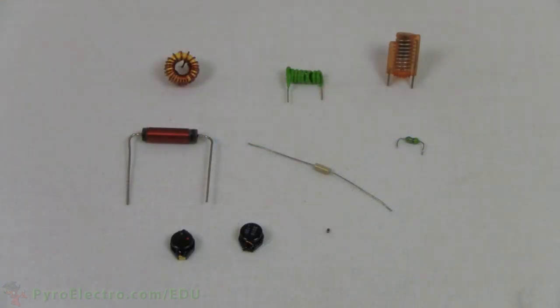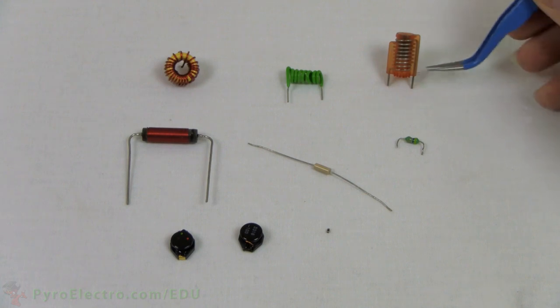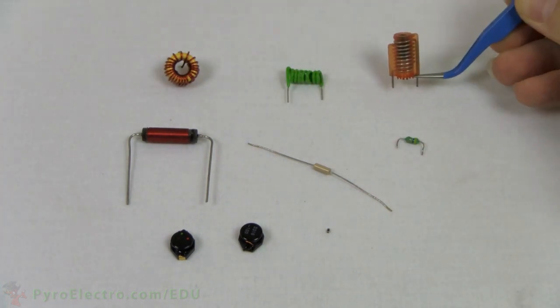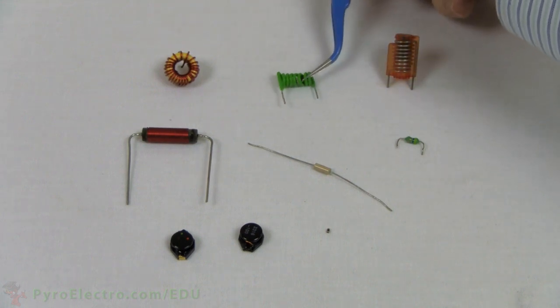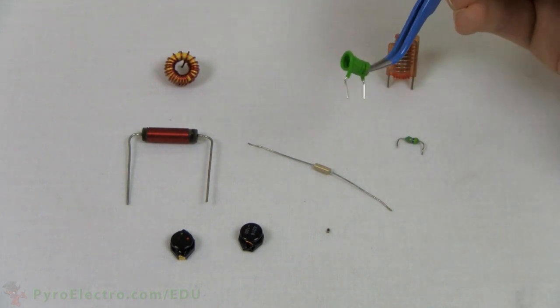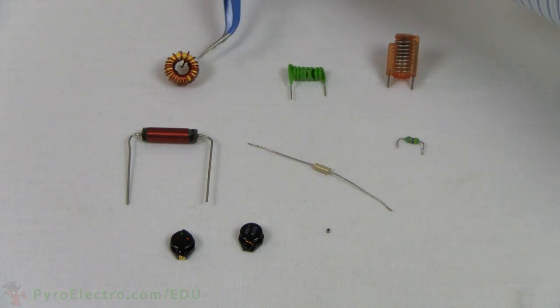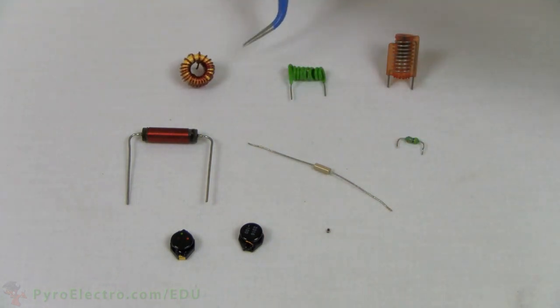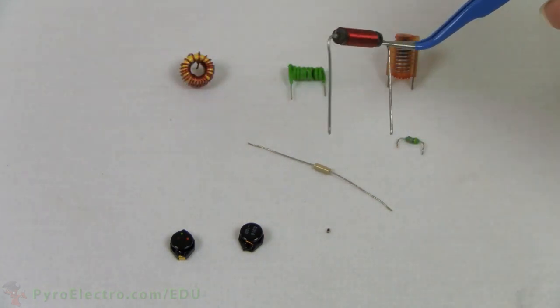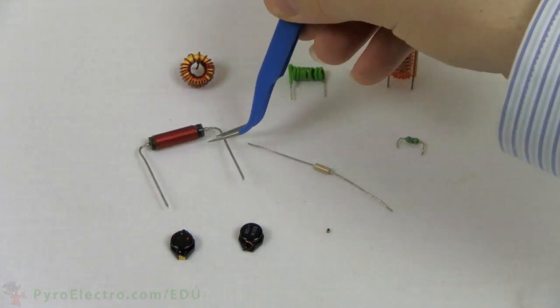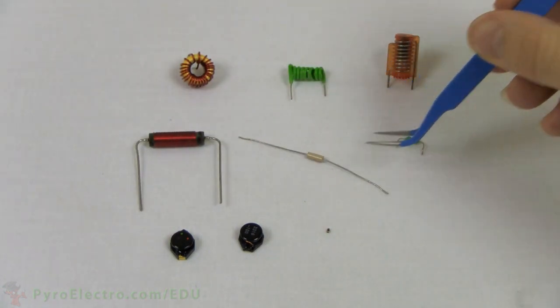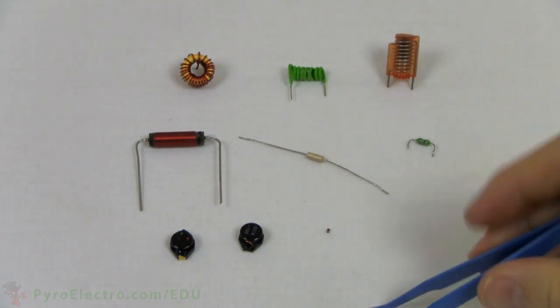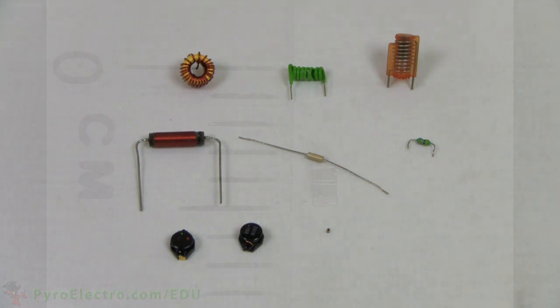You can find many different types of inductors in the world of modern electronics. Here are a few of the most common: variable inductors, the standard air coil inductor, a toroid core inductor, an inductor choke. These two are through-hole inductor chokes, and these three small guys are surface-mount inductors.